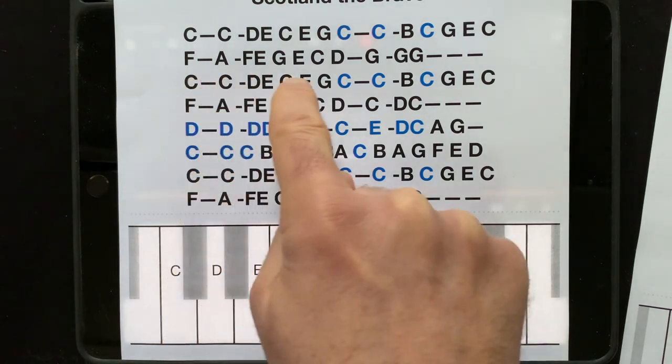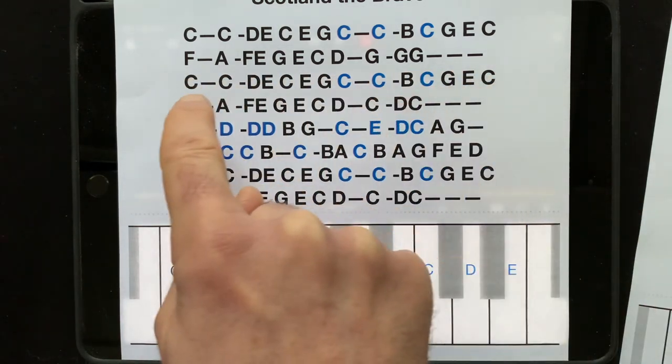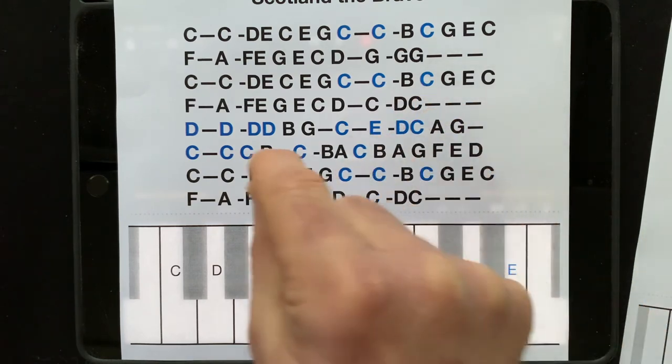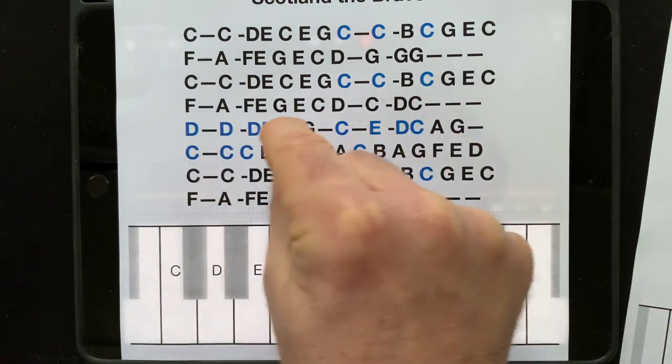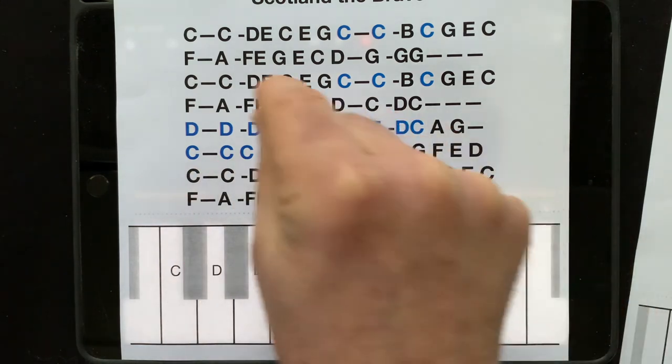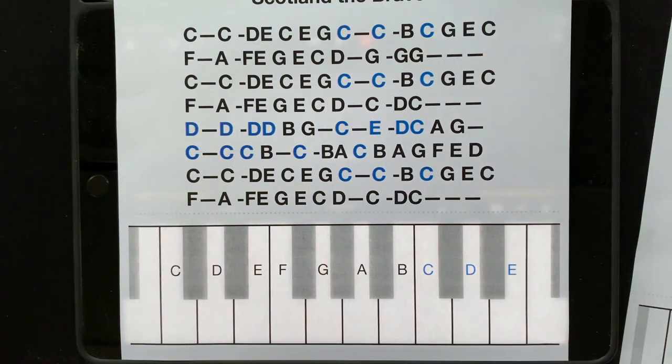And then you'll probably notice this line is the same as the first line, and then this line is almost the same as this but slightly different at the end. Then we have a new bit in the middle here. And then these two lines are the same as these two. So although it looks like a lot of stuff, a lot of it is the same.